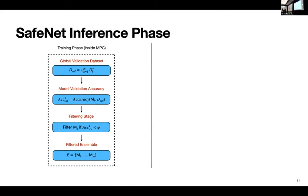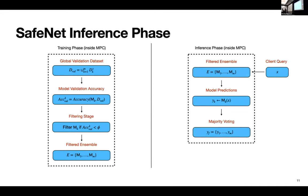So given the training phase, how does the inference phase look like? It is pretty standard where given a client query to the MPC, each model in the ensemble will give a model prediction, followed by you do a majority voting to get the final prediction here. Now, given both the training and testing phase, we check how does it perform in practice.